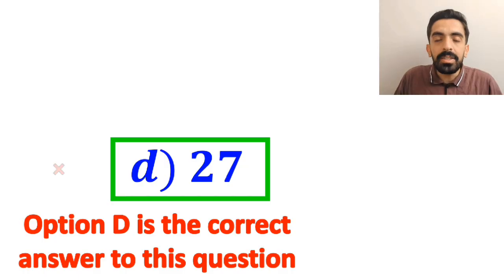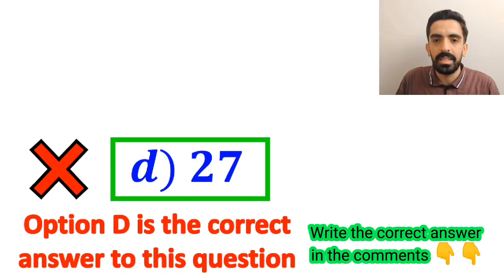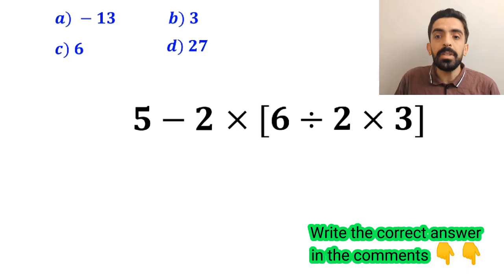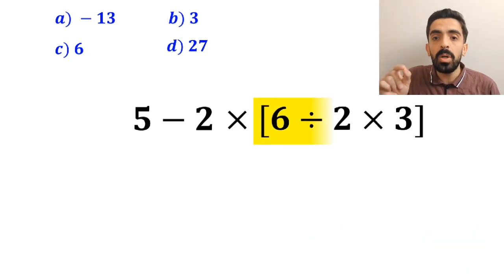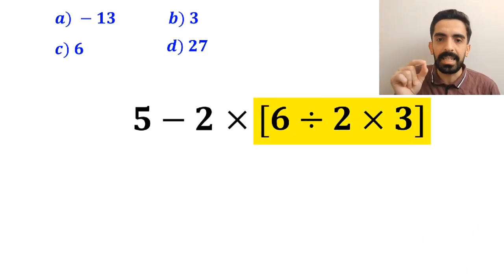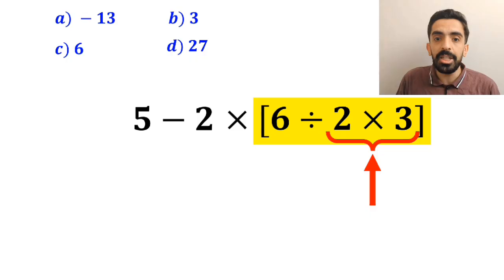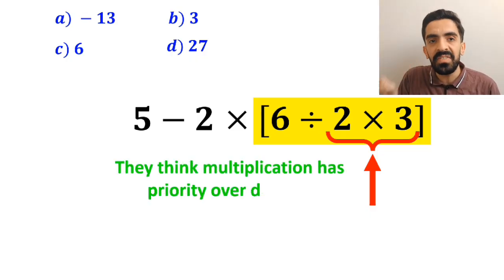But it's not the correct answer to this question. Also, some other people first go straight to the expression inside the brackets and start with multiplication between 2 and 3, because they think multiplication has priority over division.